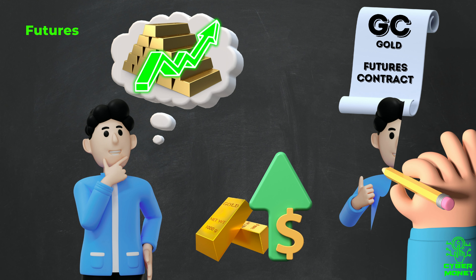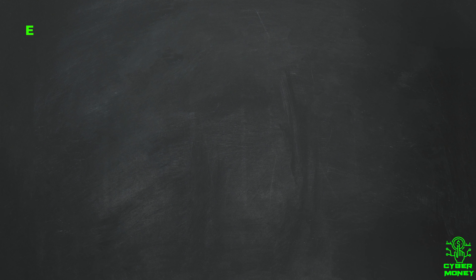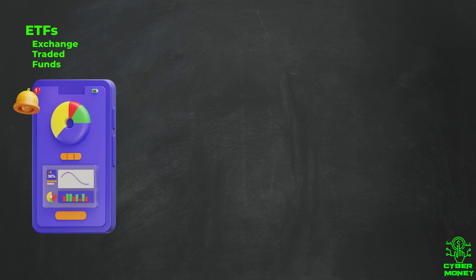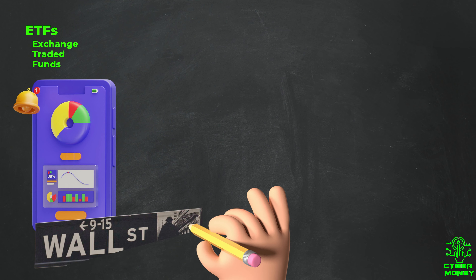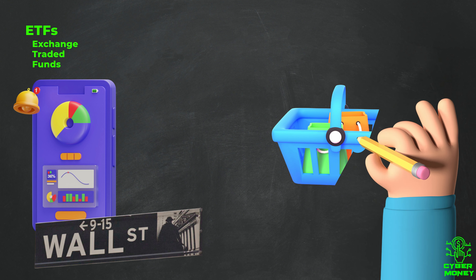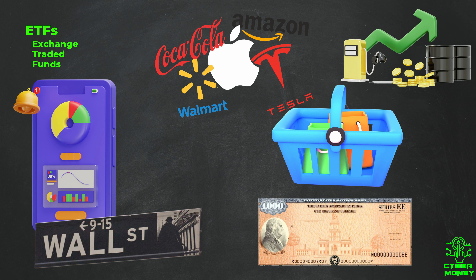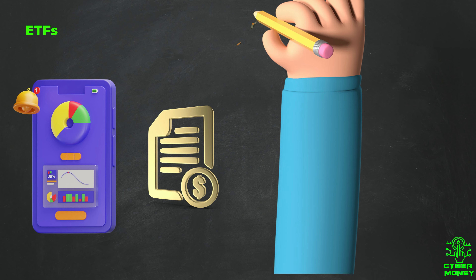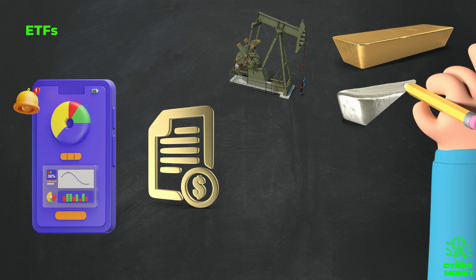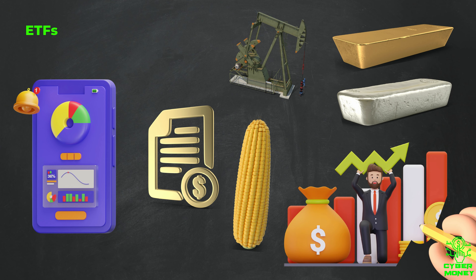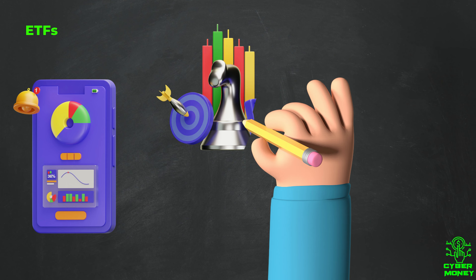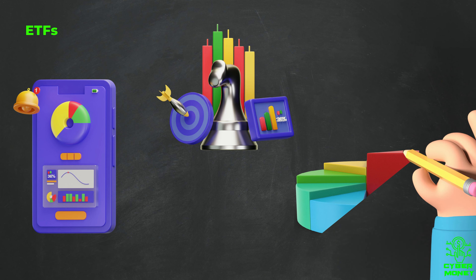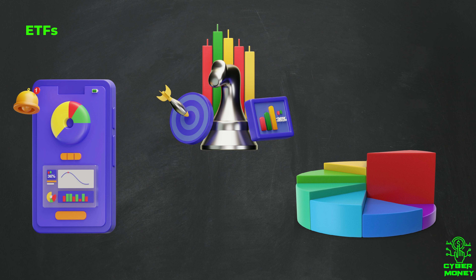Another way to invest in commodities is through ETFs, or exchange-traded funds — a type of investment fund traded on stock exchanges. ETFs are baskets of assets like stocks, bonds, or commodities, allowing investors to gain exposure to diverse assets. Commodity ETFs typically invest in futures contracts on commodities such as oil, gold, silver, or agricultural products, which can provide a way for investors to gain exposure to the price movements of these commodities. Commodity ETFs are designed to provide a convenient and cost-effective way for investors to gain exposure to commodity markets, as well as to hedge against inflation and diversify their portfolios.